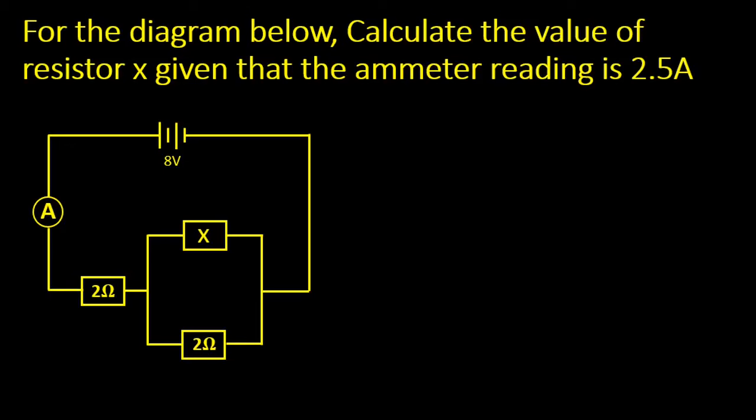Hi guys, welcome to this video. We have this question on current electricity. Let's see how we can answer it. It says, for the diagram below, calculate the value of resistor x given that the ammeter reading is 2.5A.